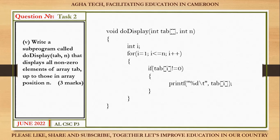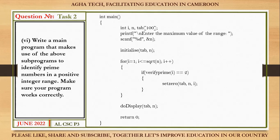Sub-program four — doDisplay: takes tab (integer array) and n. Return type is void. For i from 1 to n, if tab[i] ≠ 0 then print tab[i]. This displays all non-zero elements of the array.